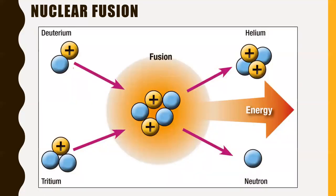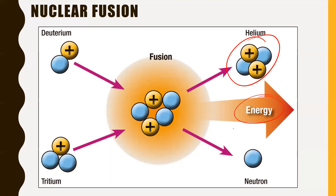Here's an example: two different types of hydrogen — deuterium and tritium. Deuterium is an isotope of hydrogen with one proton; tritium is another isotope of hydrogen with one proton. If you fuse these together, you actually create helium — two protons, two neutrons — and a neutron gets released because you have to keep the number of particles the same. Three neutrons go in, three go out. A huge amount of energy gets released. The energy input is not as large as the energy output — the net energy output is quite substantial.